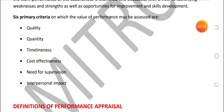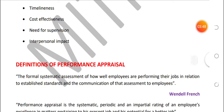Timeliness: if work is completed within the given time period, performance will be good. Cost Effectiveness: if output is high and input cost is low, performance will be good. Need for Supervision: if a subordinate can work without constant supervision and maintains discipline, performance will be good. Interpersonal Impact: if the subordinate has good teamwork, communication skills, leadership qualities, and maintains no conflicts with colleagues or superiors, performance will be good.